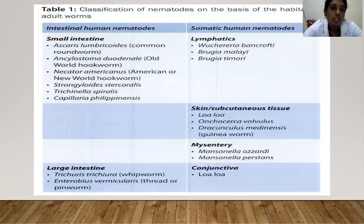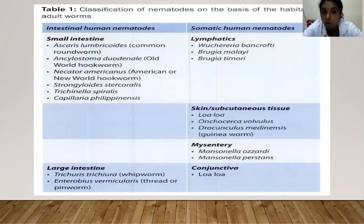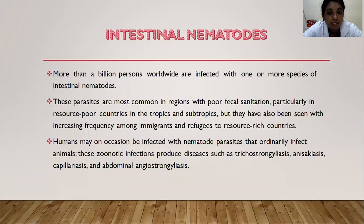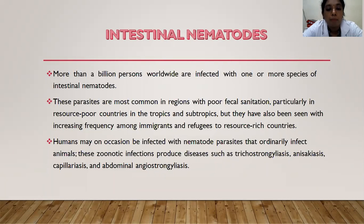Today I will be talking about only intestinal human nematodes in detail. The tissue nematodes will be discussed later. More than a billion persons worldwide are infected with one or more species of intestinal nematodes. These parasites are most common in regions with poor fecal sanitation, particularly in resource-poor countries in the tropics and subtropics. They have also been seen with increasing frequency among immigrants and refugees to resource-rich countries. Humans may on occasion be infected with nematode parasites that ordinarily infect animals.